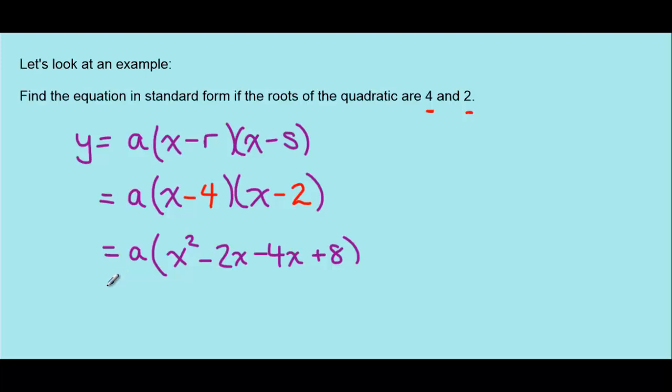And then collecting all of these like terms and simplifying, a(x squared minus 6x plus 8).